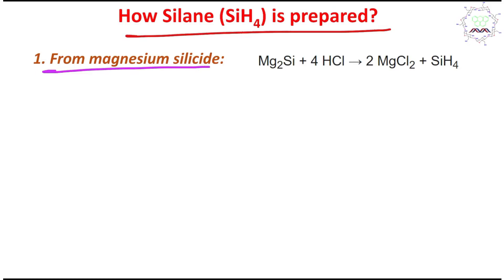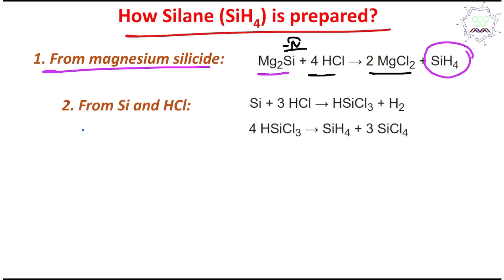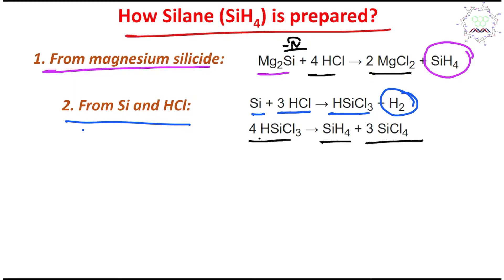Silanes can be prepared from magnesium silicide (Mg₂Si) — you may consider this the carbide analog, since both carbon and silicon belong to the same group. In magnesium silicide, the oxidation state of silicon is −4. If it reacts with HCl, it ultimately produces magnesium chloride as a salt and silane gas. The second method is from silicon and HCl: pure silicon reacts with HCl to first produce HSiCl₃ and hydrogen gas, and later HSiCl₃ breaks down to produce silane and silicon tetrachloride.